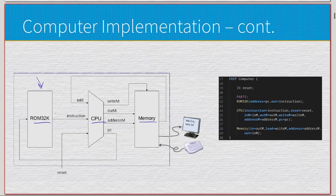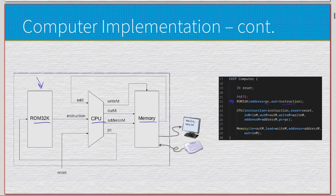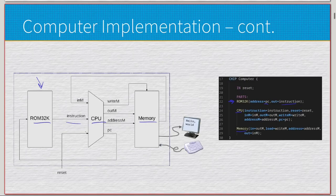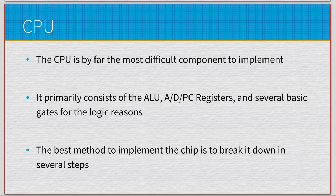At a high level, this is the computer itself — we have the ROM 32K, CPU, and our memory. The ROM 32K is provided by Nand2Tetris; you don't make this chip, though you do have to write the line and pass the PC (program counter) into it with the various instructions. The CPU and the memory are the two components of this particular project — making the actual CPU and making the memory, with instructions going into the CPU, writing to memory, the address, program counter, RAM, screen, and keyboard.